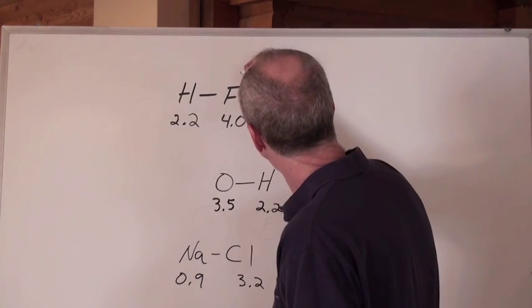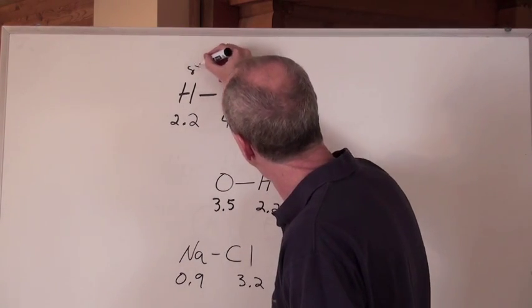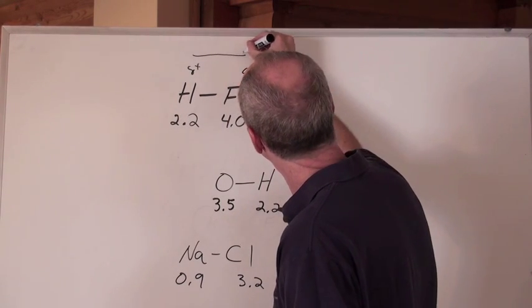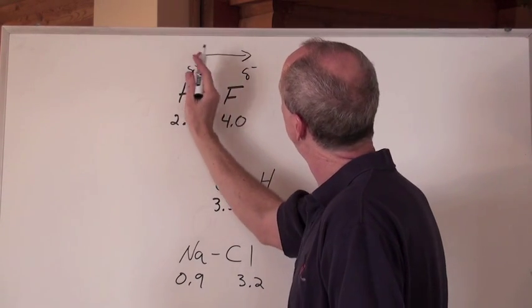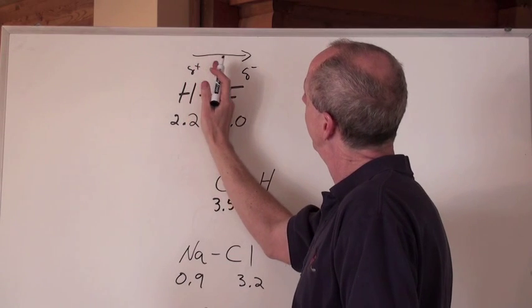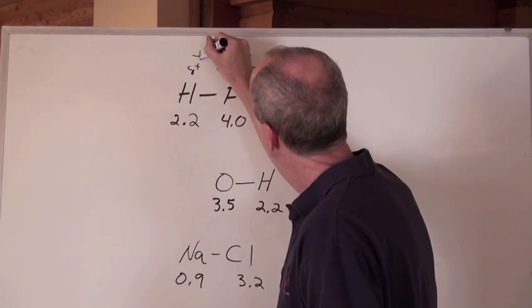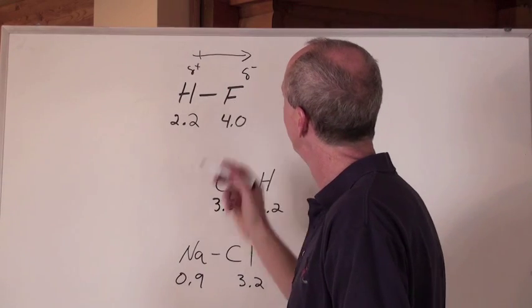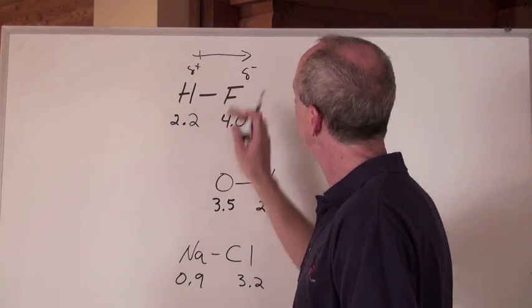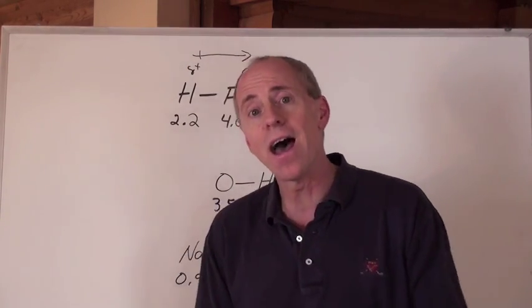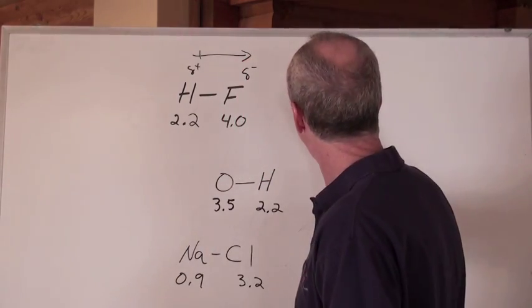That means there's a partially negative end here and a partially positive end here. We draw an arrow from the one that is losing the electrons in the bond to the one that is gaining the electrons in the bond. Put a little cross there - it means that's the positive end and that's the negative end. So you don't actually have to write these partials there. That's a molecule that's polar.